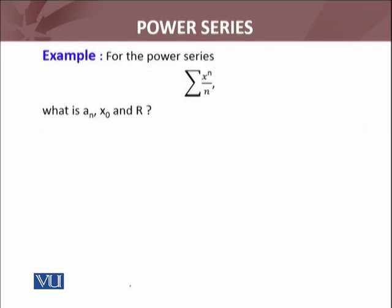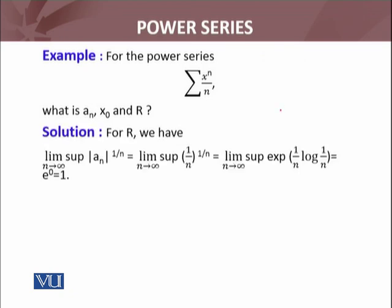Let's discuss another example for the power series. What is a_n, x_0, and of course the radius of convergence? For this example, a_n is 1/n. x_0 is 0, so this is an x_0 = 0 power series. Let's see what we have. Now we have to calculate the limit superior of the sequence |a_n|^(1/n).